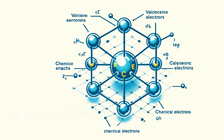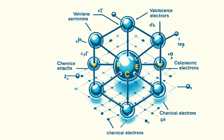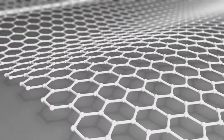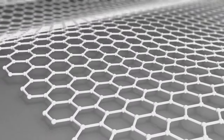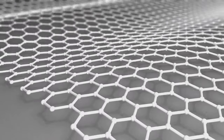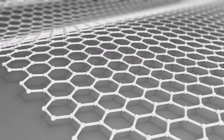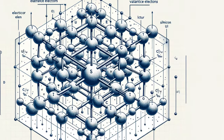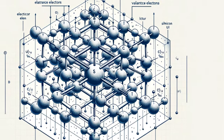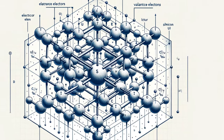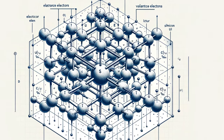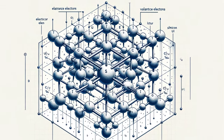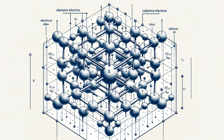In a pure semiconductor crystal, each atom shares its valence electrons with its neighbors, forming a stable and electrically neutral structure. However, this perfect balance can be disrupted by introducing impurities, a process called doping.